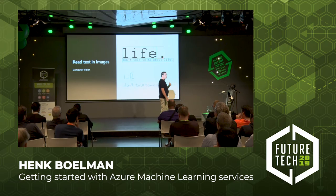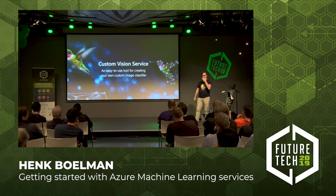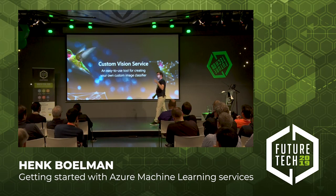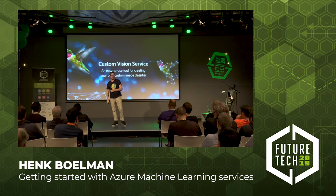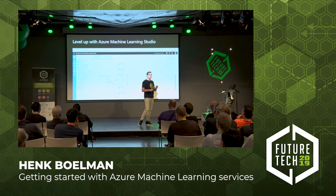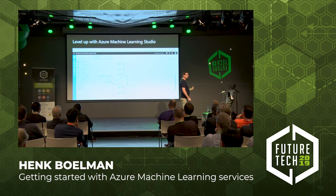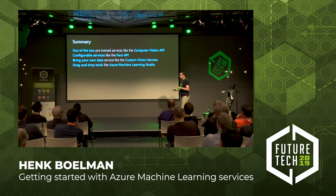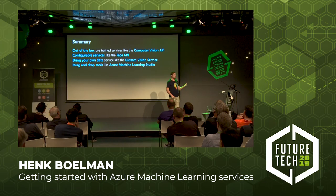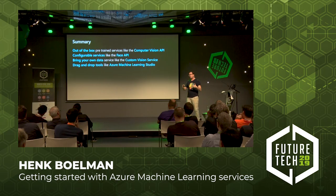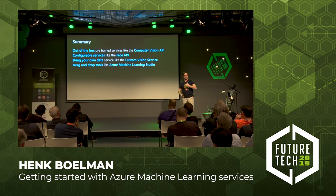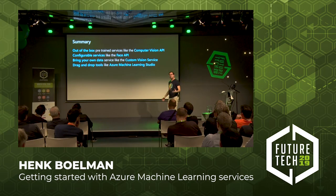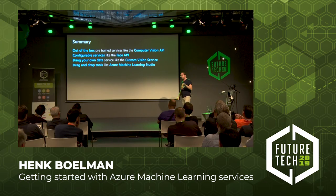You can detect celebrities in pictures, do out-of-the-box OCR to read handwriting and typed text. There is a Custom Vision Service where you can bring your own images and train a model just by clicking a train button. And there is Azure Machine Learning Studio, an easy drag-and-drop tool where you can create your own models and expose them through an API. So there are out-of-the-box pre-trained models, configurable services like the Face API, bring-your-own-data services like Custom Vision, and drag-and-drop tools like Azure Machine Learning Studio.